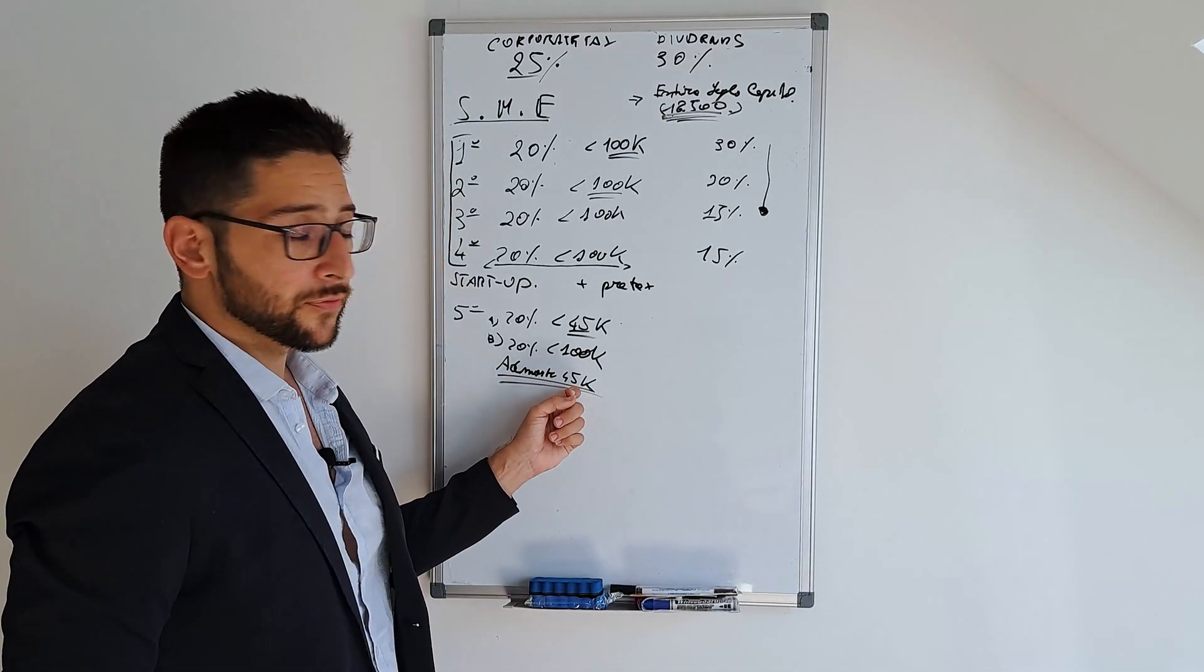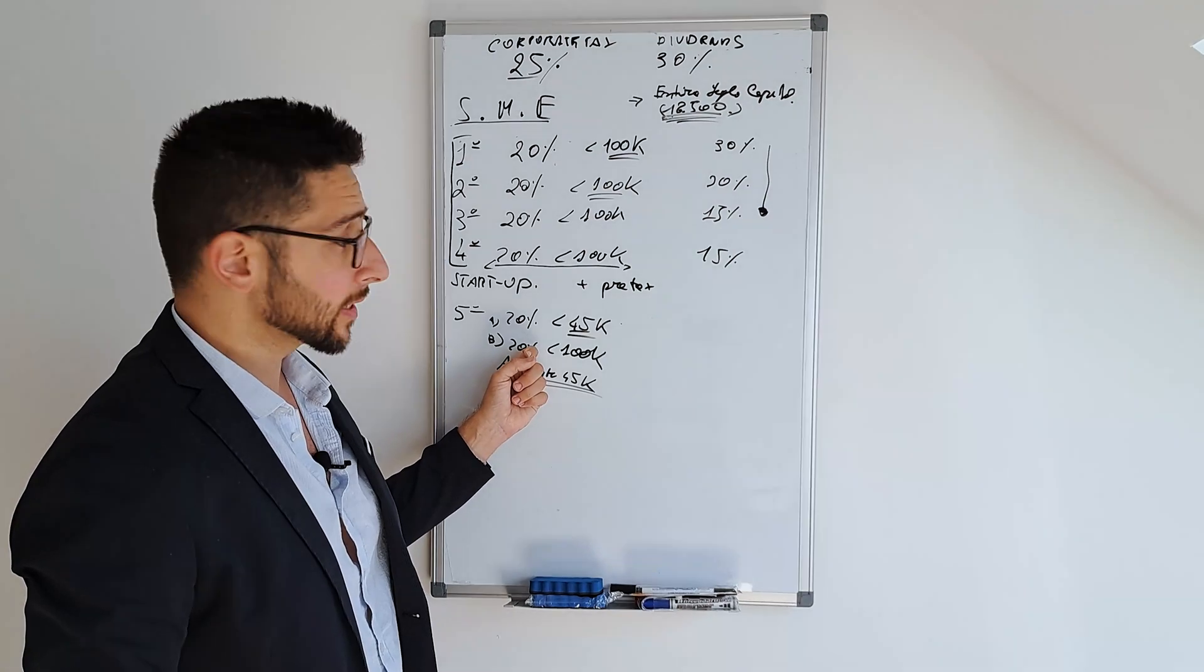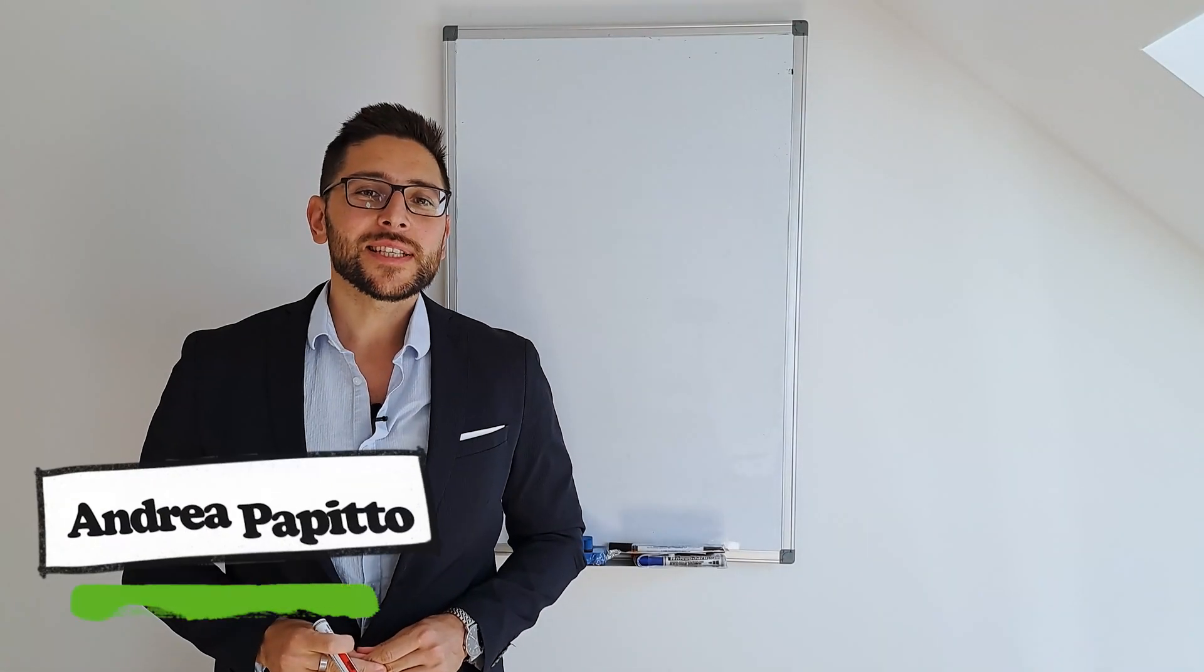So if you pay yourself a salary of 45k as administrator, you can keep 20% profit tax up to 100k. Hello guys, welcome back to Essentaxa.